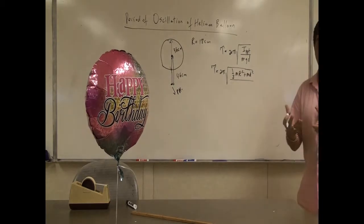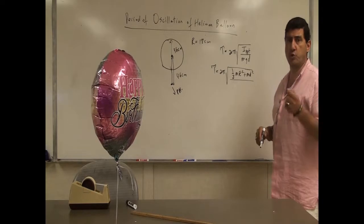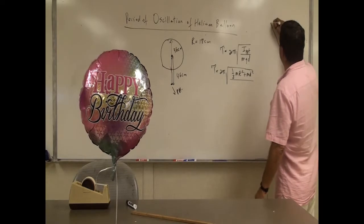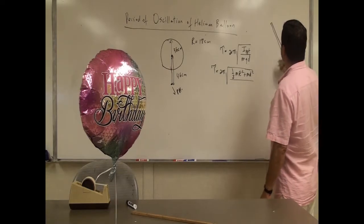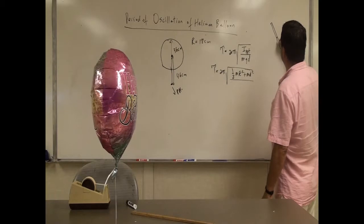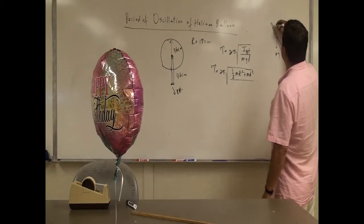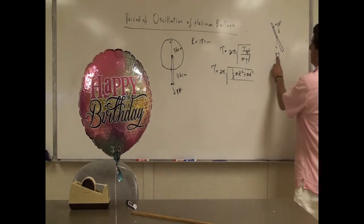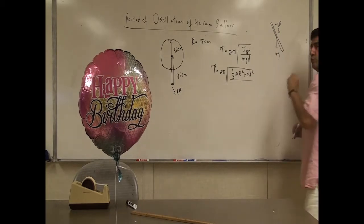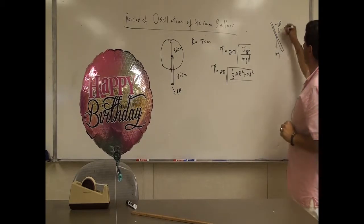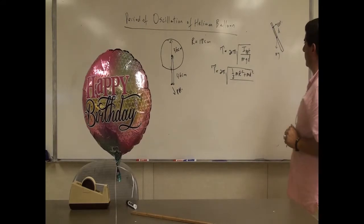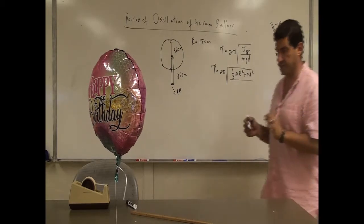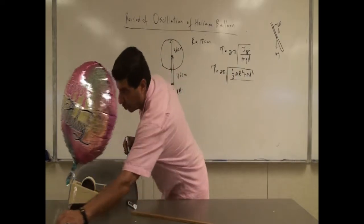The meaning of mgd is the torques on the system. We primarily use this equation for a physical pendulum where you have the weight mg at the center, you displace it from a pivot point, and the distance d is from the pivot point to the center of mass. The weight provides the torque. But in our case, we actually have two things competing against each other — both providing torque on the system.